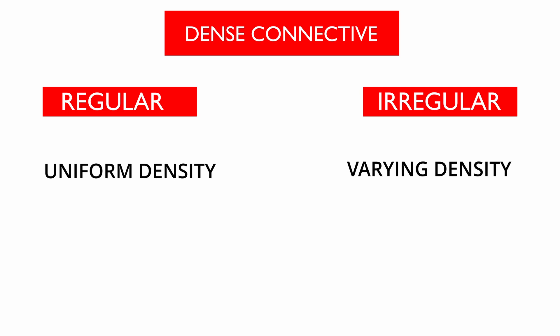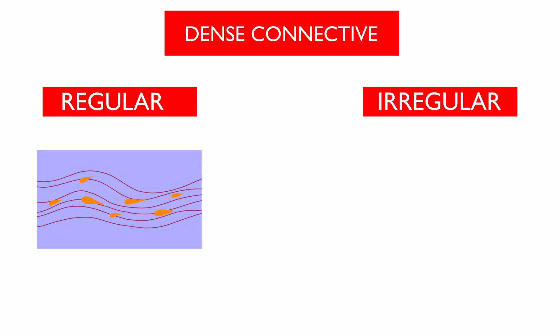This difference comes from the arrangement of fibers, as fibers in dense regular are placed in a regular pattern, and fibers in dense irregular are placed in an irregular arrangement.